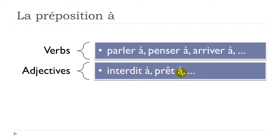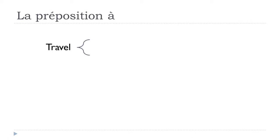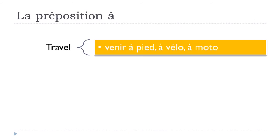It's also possible to use À to express how something is done. For instance: 'fait à la machine' — done by machine, or handmade — 'fait à la main'. In French you use À in these constructions to describe the method or manner in which something is made or done.